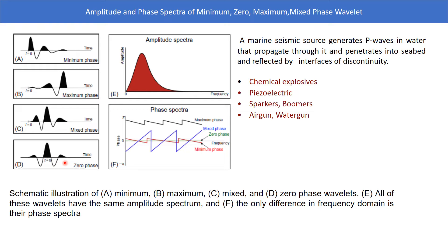You need to know these phases in detail — it is very important for the exam. With minimum phase, the amplitude diminishes with time. Maximum phase is the opposite case. For mixed phase, the amplitude is simultaneously increasing and decreasing. For zero phase, at a particular point the amplitude is zero with a symmetrical wavelet. The amplitude spectra are the same for all phases, but the phase spectra differ for maximum, mixed, zero, and minimum phase.